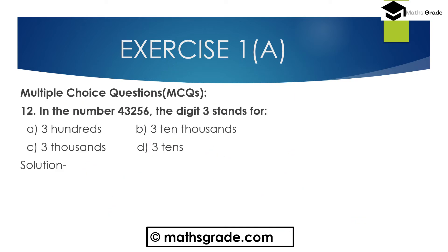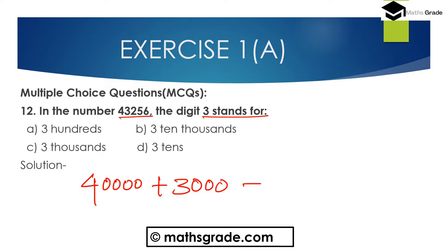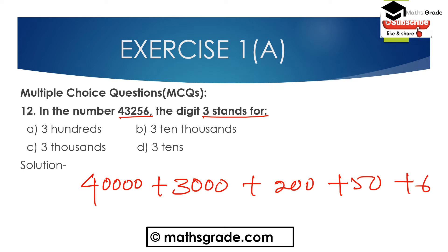Now question number 12, a multiple choice question: In the number 43,256, the digit 3 stands for what? Expanding 43,256: 40,000 + 3,000 + 200 + 50 + 6. So the digit 3 stands for 3,000. Option C is the correct answer.